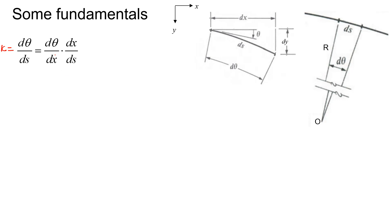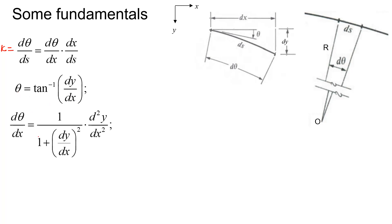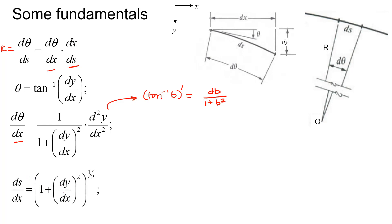The curvature is dθ/ds, which by chain rule equals dθ/dx · dx/ds. Differentiating θ = tan⁻¹(dy/dx) with respect to x gives: dθ/dx = [1/(1 + (dy/dx)²)] · d²y/dx², using the standard derivative of tan⁻¹(b) = db/(1 + b²). We have ds/dx = √(1 + (dy/dx)²), so dx/ds = 1/√(1 + (dy/dx)²).